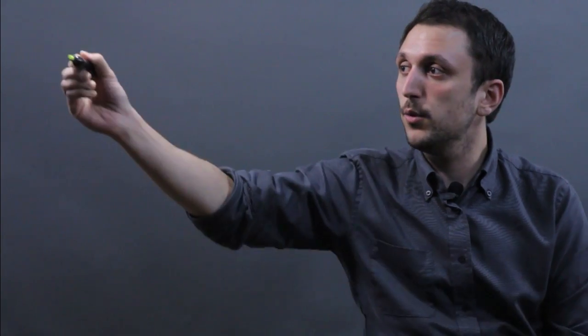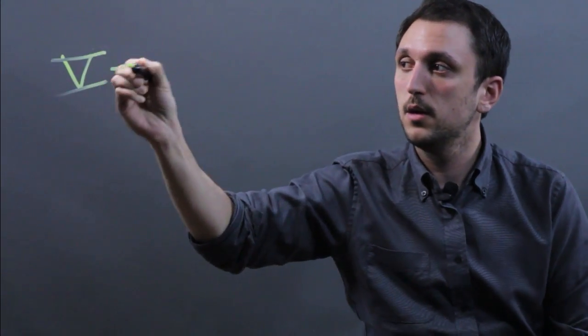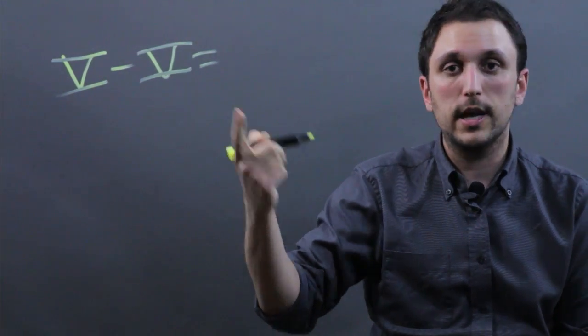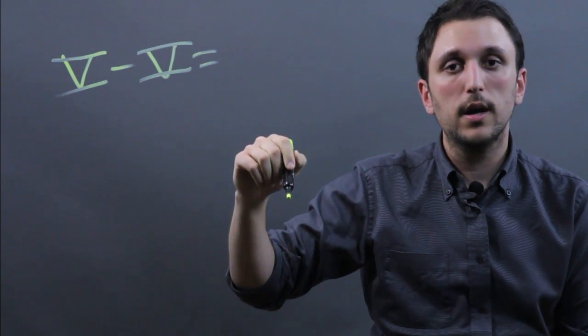Now, the most important disadvantage to the Roman numeral system is that there's no fractions and there's no zero in Roman numerals. So if you had V or 5 minus 5 equals, well, nothing. You can't figure it out because there's no zero in Roman numerals.